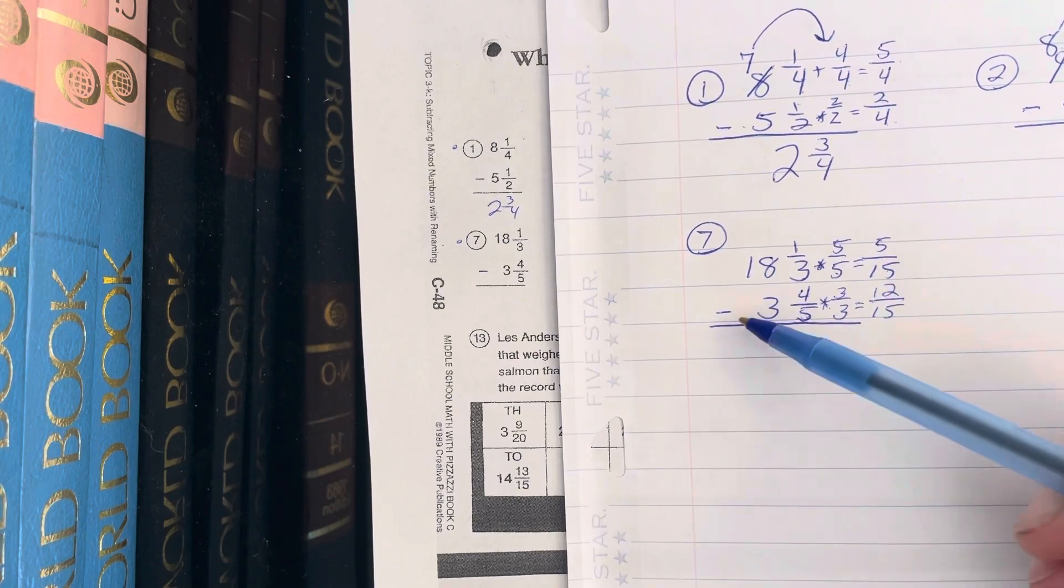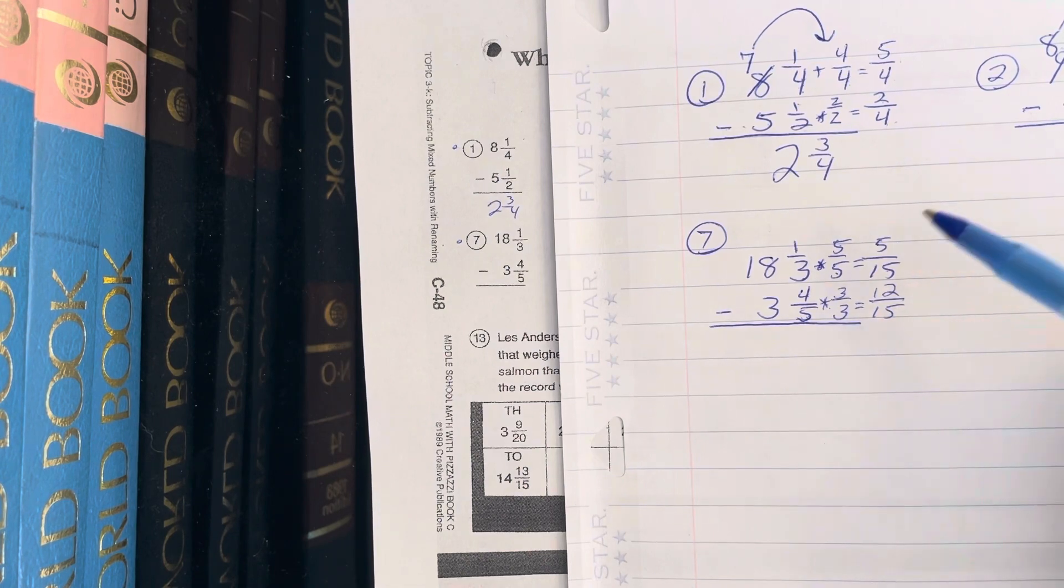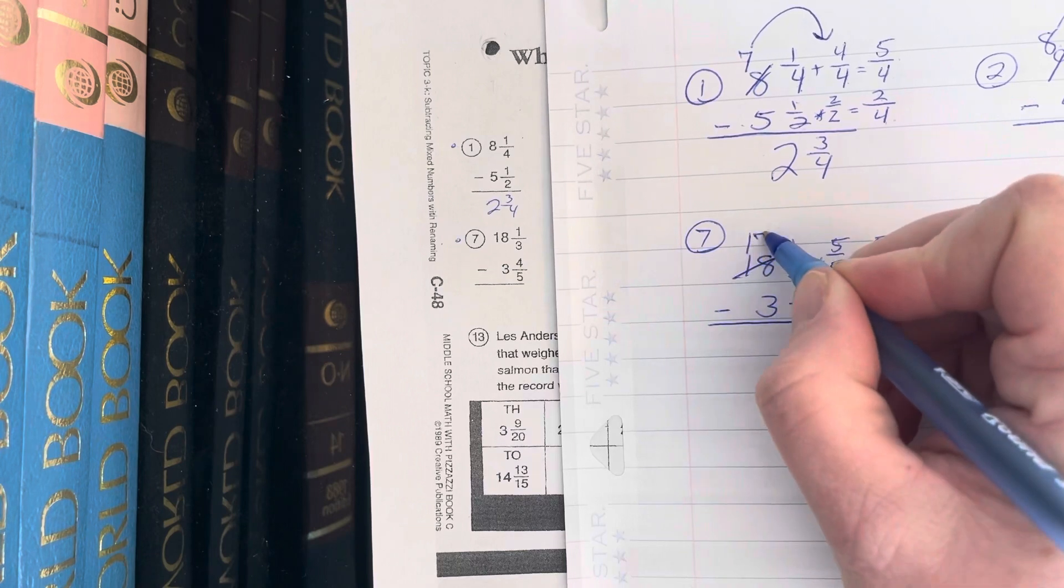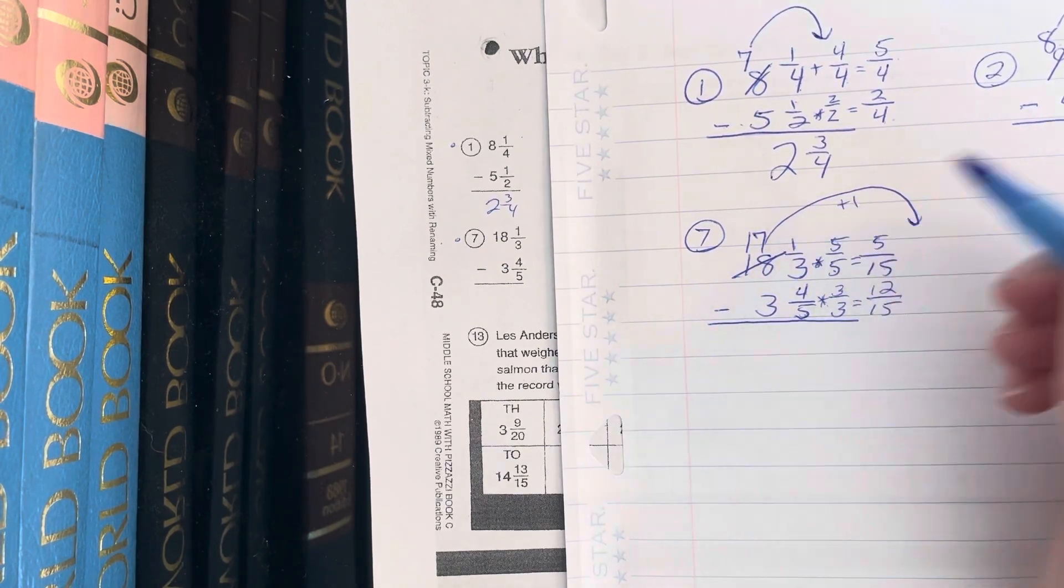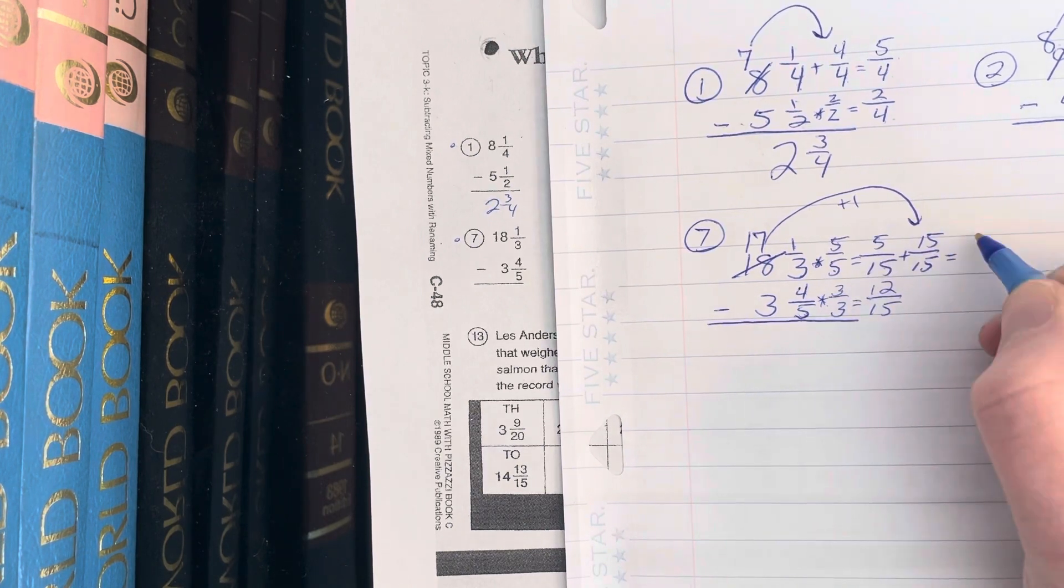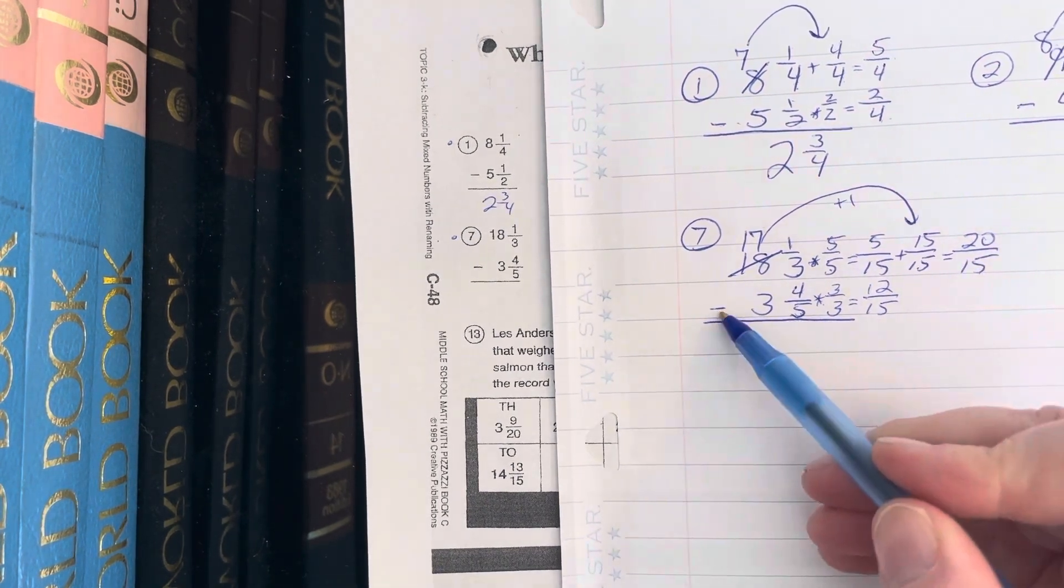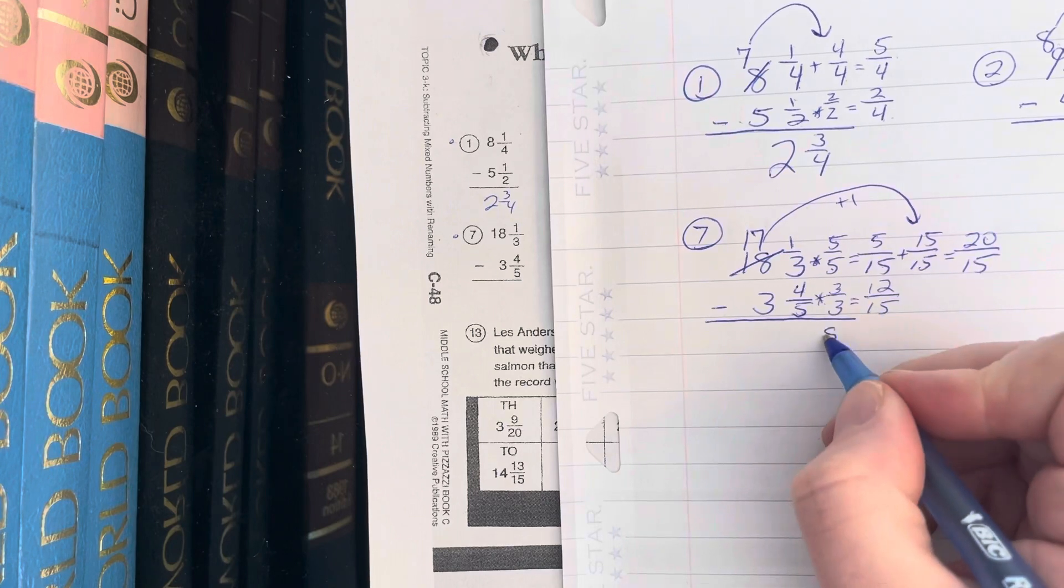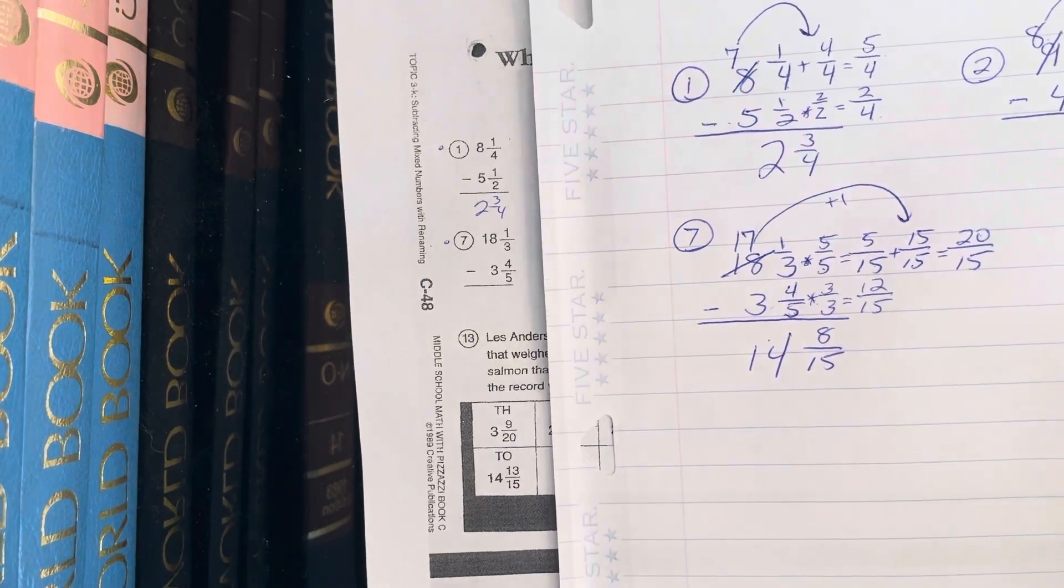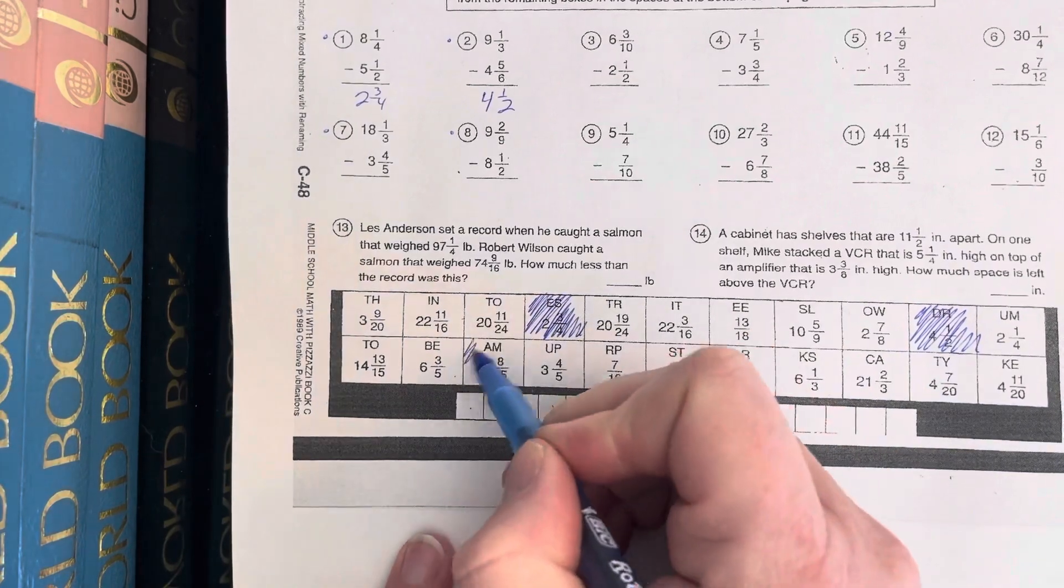So now it's 5/15 minus 12/15. Now again, I'm taking away too much cake here, so I need to give myself some more pieces or I'm gonna go into negatives. So this is gonna become 17 whole cakes. I'm giving a whole cake over here, which I'm gonna cut into 15 equal pieces. So now I have 20 pieces at the piece size of 15. 20/15 minus 12/15 is gonna give me 8/15. 17 minus 3 is 14. Hopefully it's gonna be down on the bottom: 14 and 8/15. Here it is - I'm gonna cross that baby out.